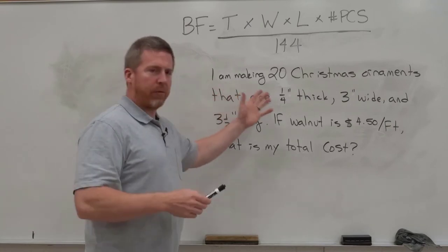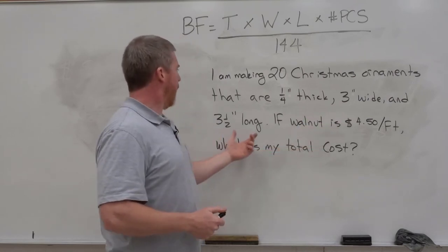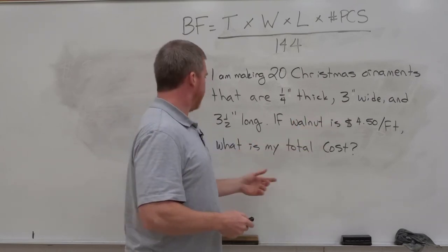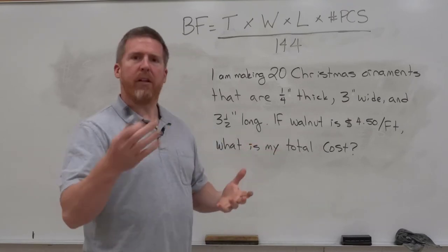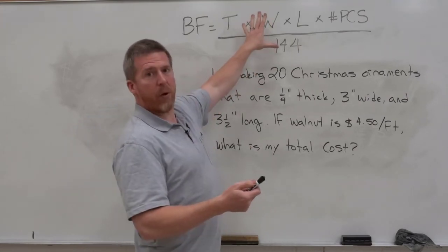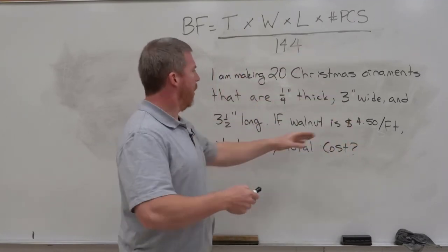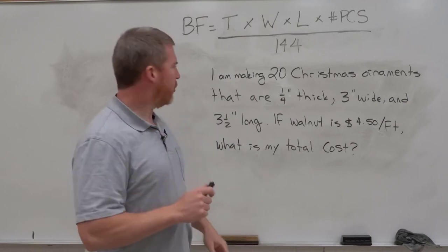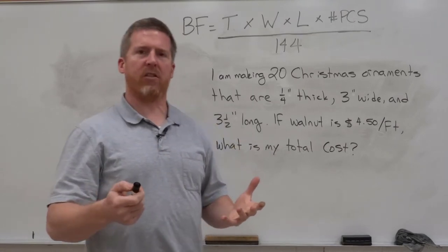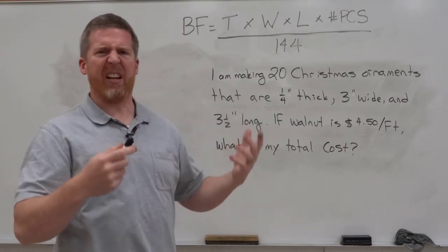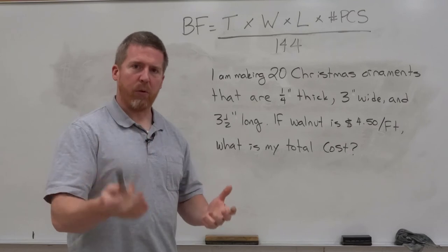For our very last problem, let's read through it. I'm making 20 Christmas ornaments that are quarter inch thick, three inches wide, and three and a half inches long. If walnut is $4.50 per foot, what is my total cost? First, this is a straight plug and chug kind of question. It plugs right into our equation that we've been using most of this whole time, and it will chug out an answer. So I've got all my measurements on there. I know my price per foot. Great. Other things to notice, that's inches, this is inches, and this one's inches. So I don't have to convert any inches or any feet back into inches by throwing in a times 12. So that's good.